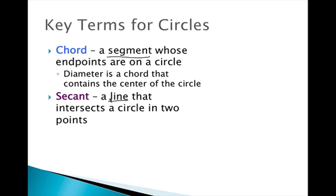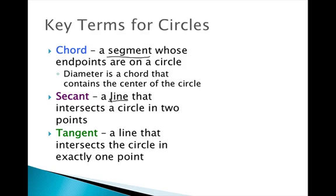The next term is a secant. A secant is a line that intersects a circle in two points, so it's similar to a chord except a chord is a segment. And then the last term is tangent. You know from our previous chapter of trig that we can find a tangent ratio, but there's also a tangent line, and a tangent line is a line that intersects the circle in exactly one point. We're going to take a look at the diagrams here.